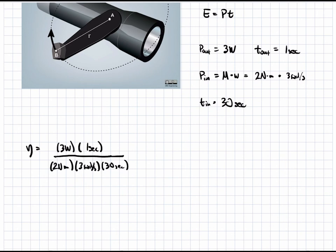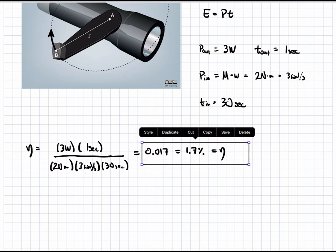And, this is equal to 0.017, which is equal to an efficiency of 1.7%. Usually, we express efficiency in the form of a percentage, but you can also leave it as a decimal. But, this is our final answer for the efficiency.